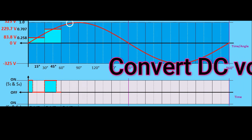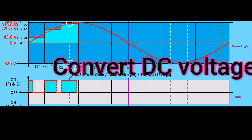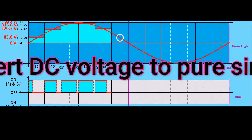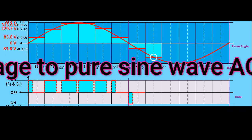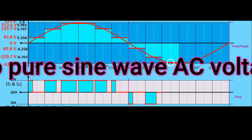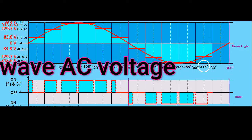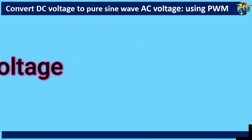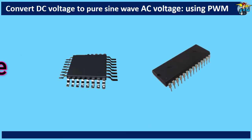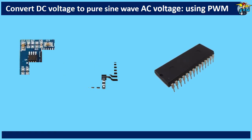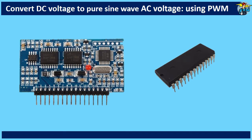Hello, good morning to everyone. Let us see today how to generate pure sinusoidal AC voltage using DC voltage. Nowadays, you can find SPWM microcontrollers in the market, and they are widely used in pure sine wave inverters.